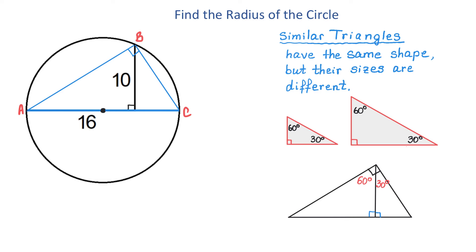Now, if in the triangle to the left one of the acute angles is 60 degrees, then the other one has to be 30 degrees. We can say that because these two triangles have the same angles, they have the same shape but their sizes are different, and we call these triangles similar triangles.